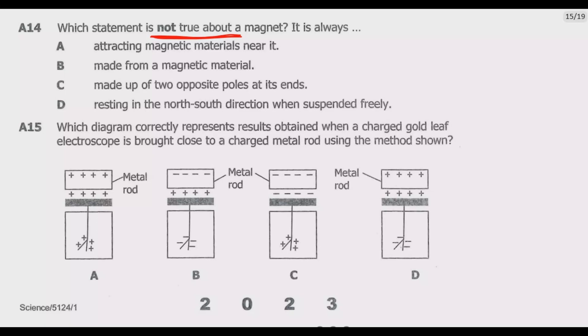B, made from a magnetic material. Magnets are always made from magnetic material. These materials are iron, nickel and cobalt. Hence B is also true. Let us look at C, made up of two opposite poles at its ends. Again, this is true. All magnets are made up of two opposite poles at their ends. These are referred to as the north and the south pole. This is a fundamental property of magnets. Whether it's a small magnet or subatomic particles to the largest, they all have a north and south pole. So C is also correct.